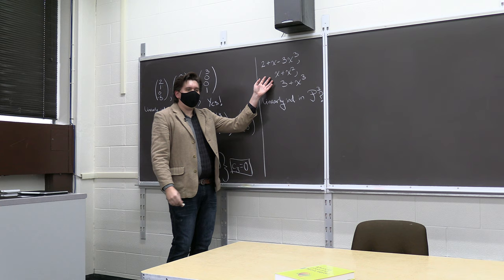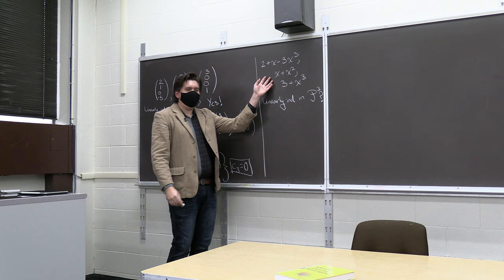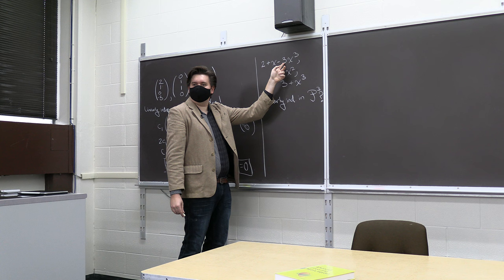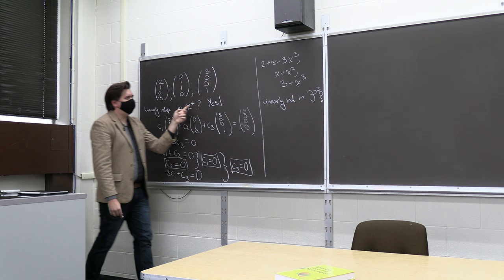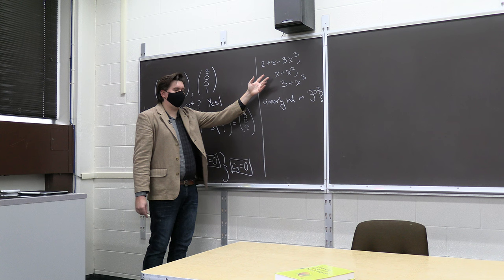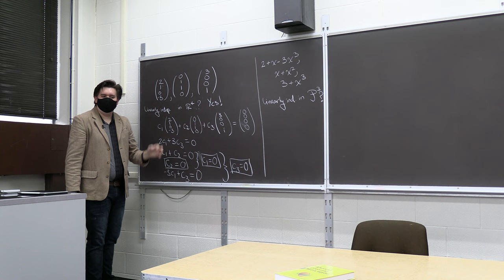Why would we ask this? Well, secretly they're the same problem. The coefficients of the first polynomial are 2, 1, 0, -3 — corresponding to the constant, x, x², and x³ terms — which matches our first vector exactly. The second polynomial gives 0, 1, 1, 0, matching the second vector, and so on. So this polynomial question is secretly the same as our original question.